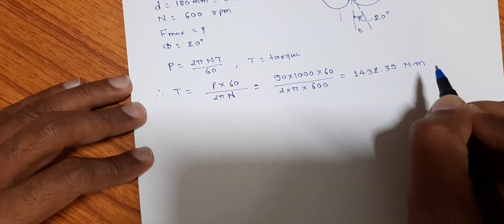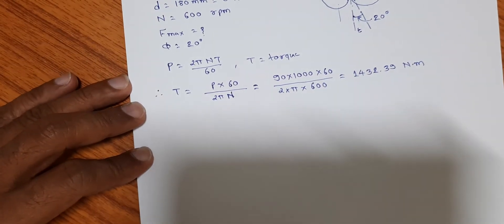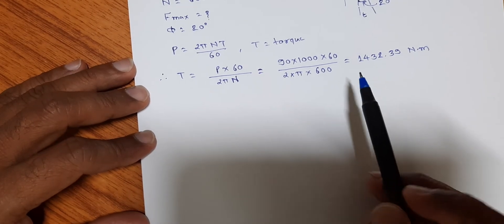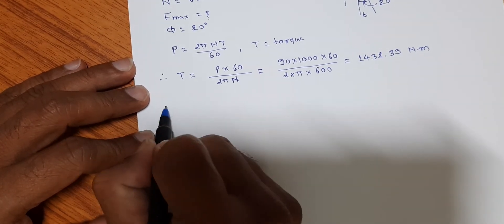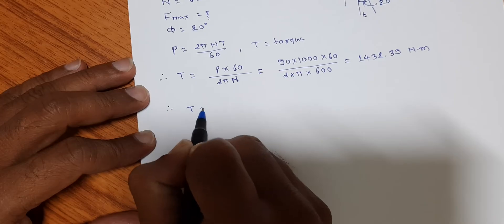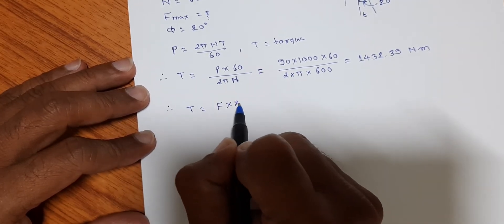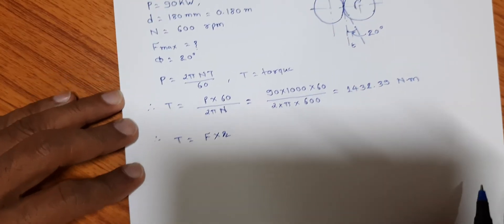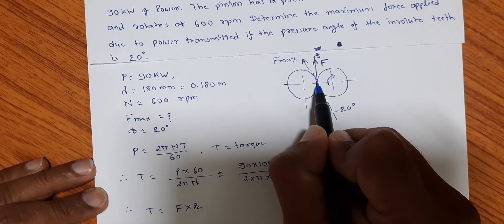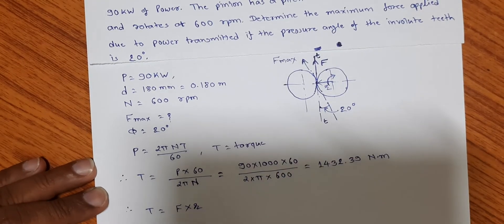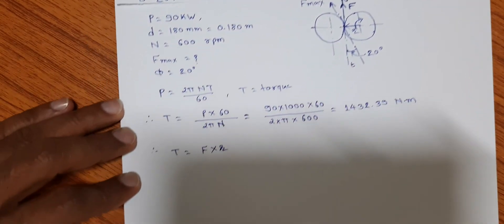Now we know that this torque is given by T is equal to force into radial distance. In the diagram, that is this distance, we can say it is a pitch radius.